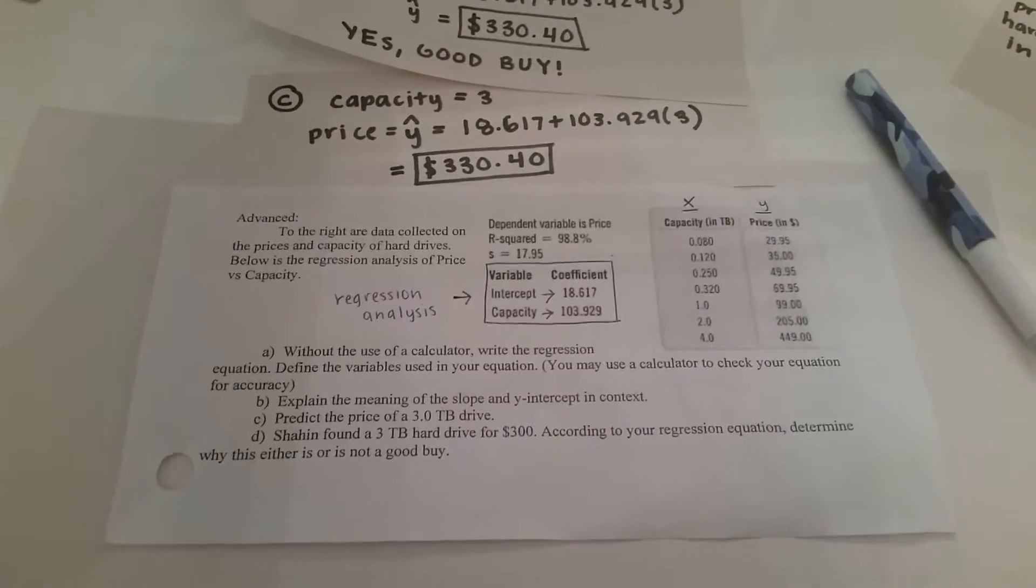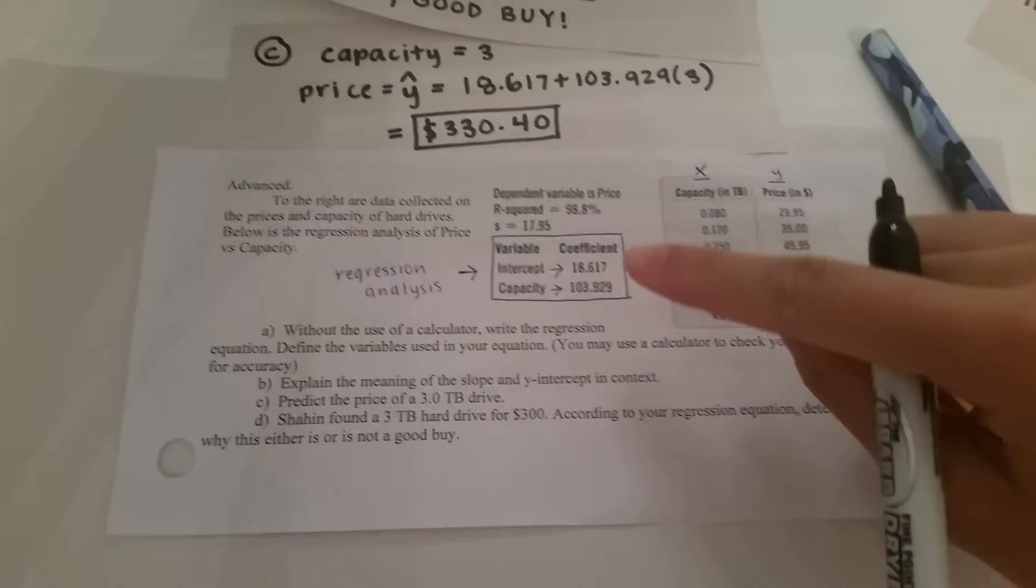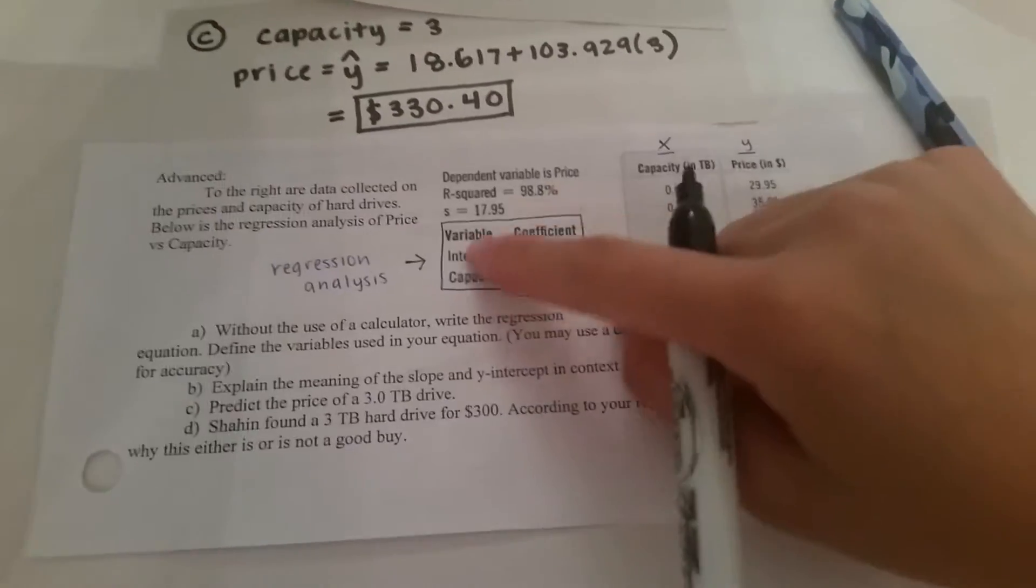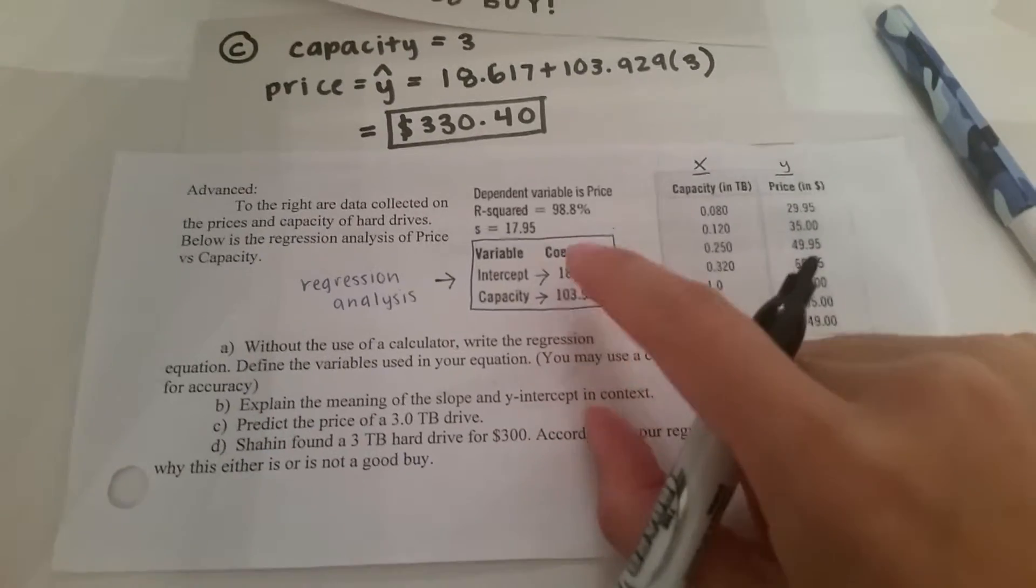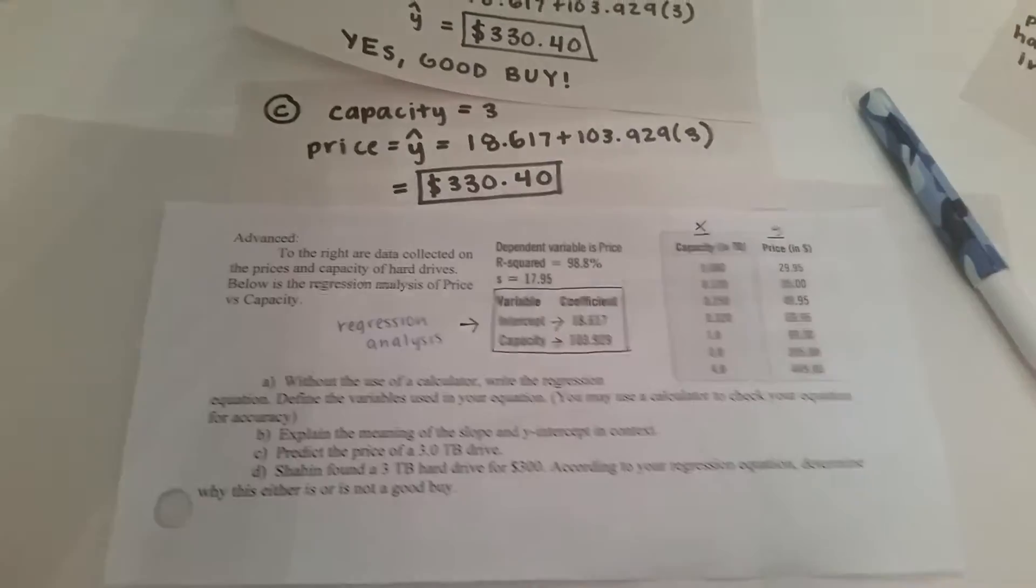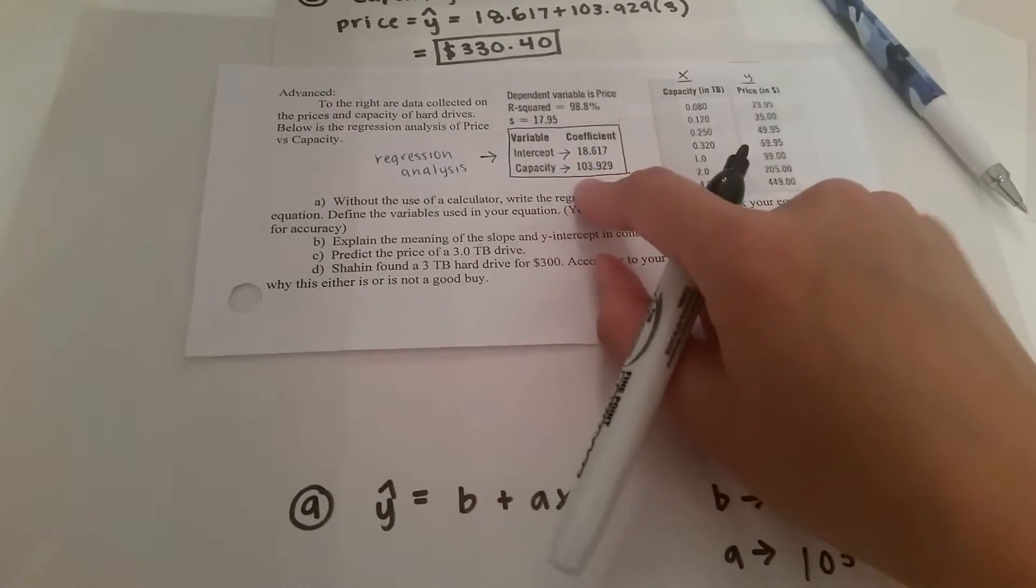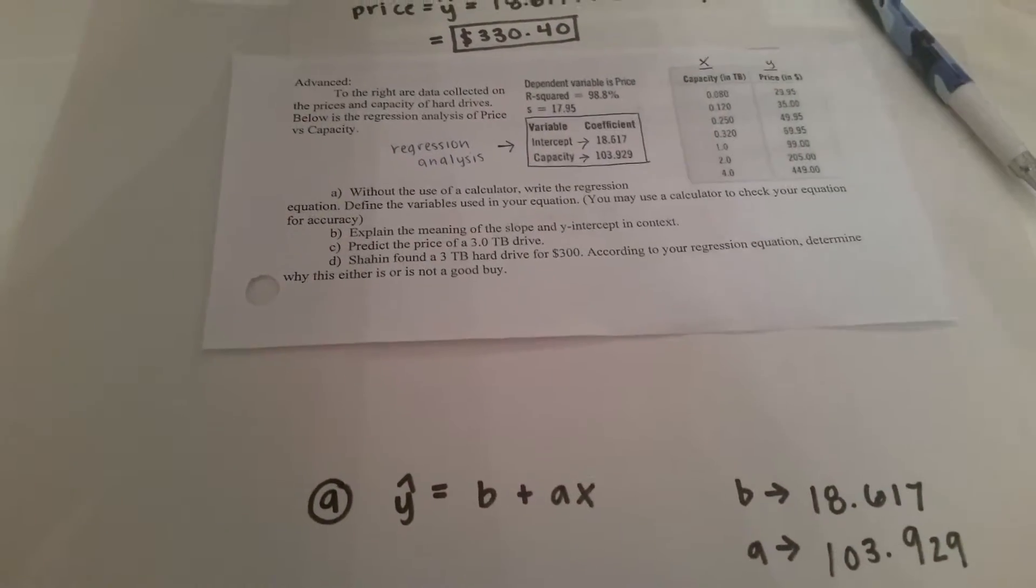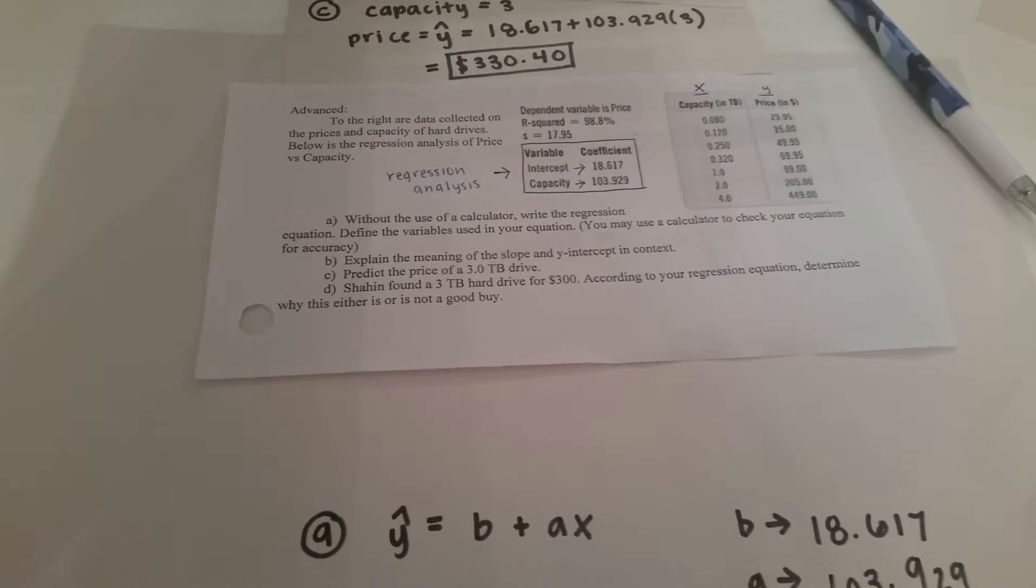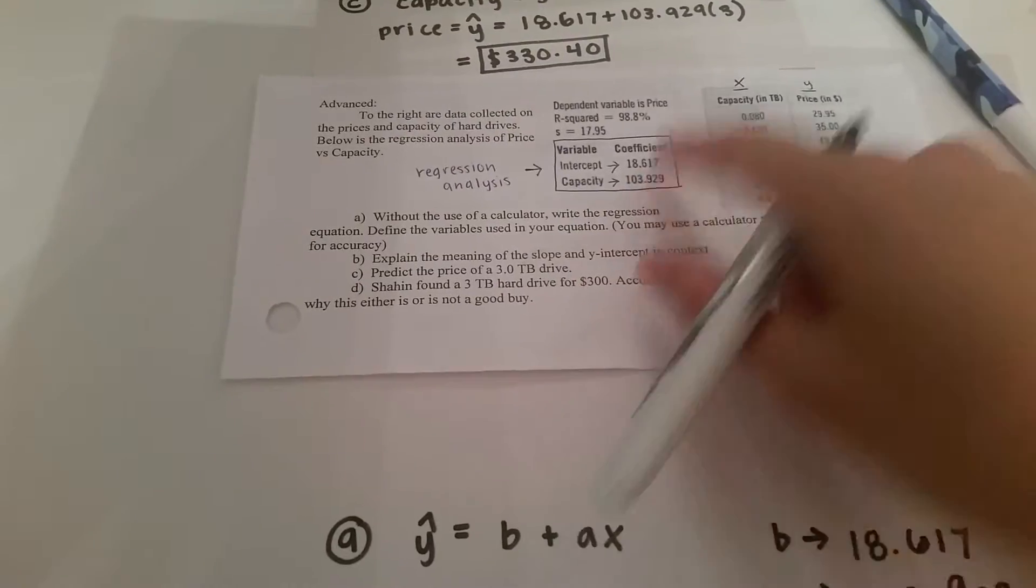Now to summarize it all, this is the analysis of regression equations. If you are given this regression analysis table, this intercept coefficient value will give you the b value right here which is the y-intercept and if you're given the capacity coefficient that is the slope value.